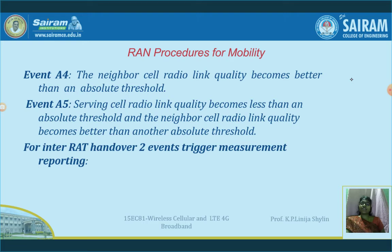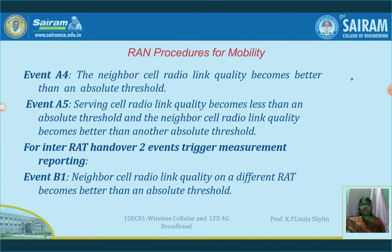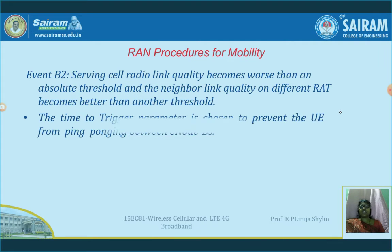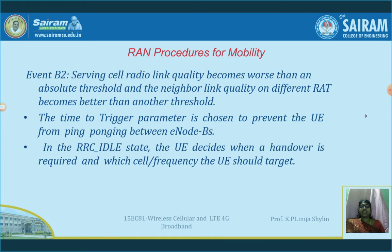For inter-RAT handover, two events trigger measurement reports. Event B1: a different RAT cell's radio link quality becomes better than an absolute threshold. Event B2: involves another threshold level. The threshold levels are changing and being compared across RATs.